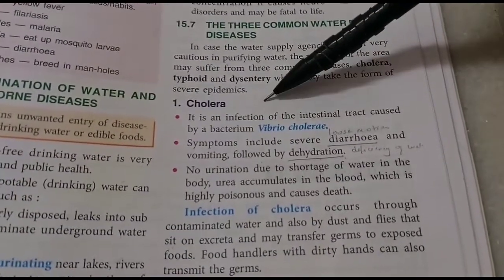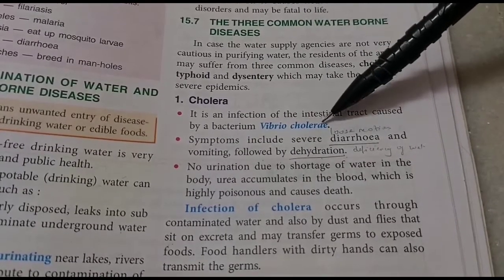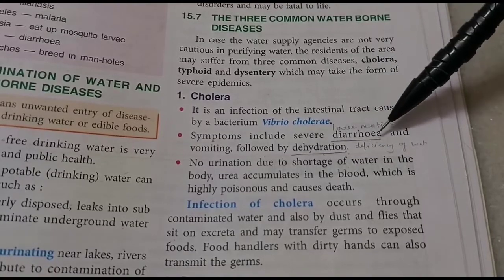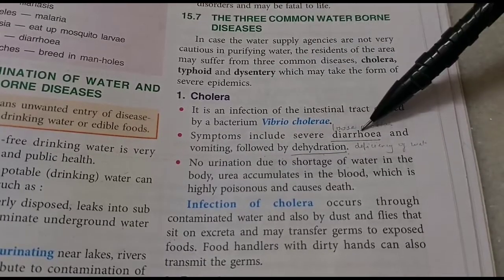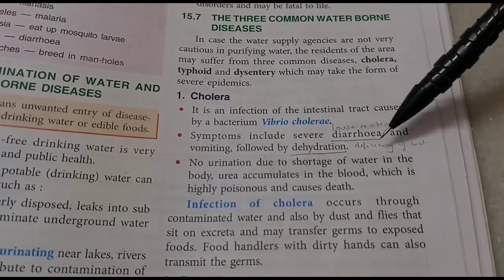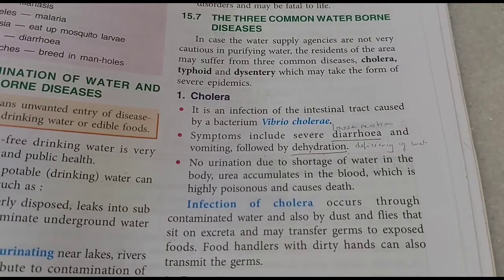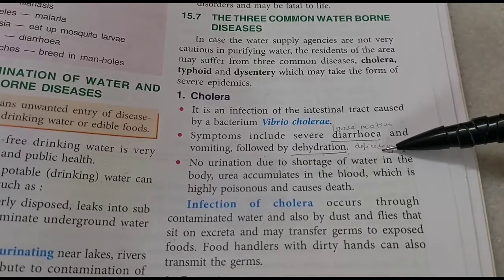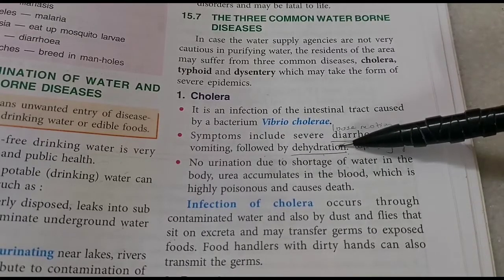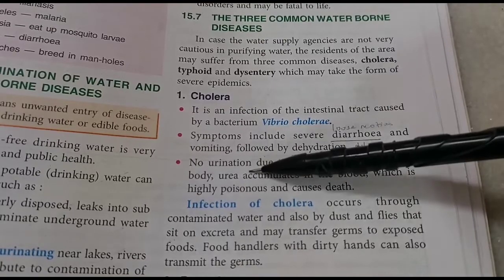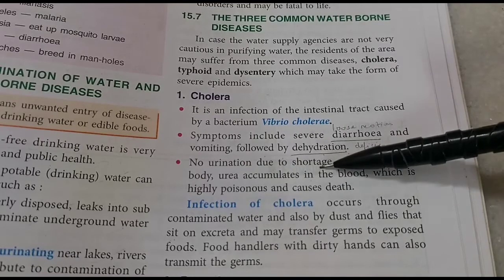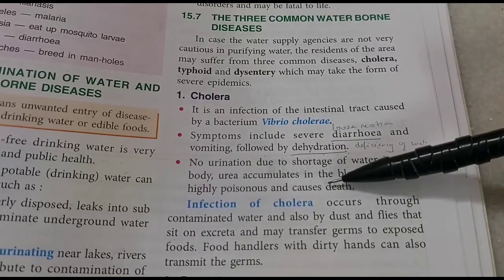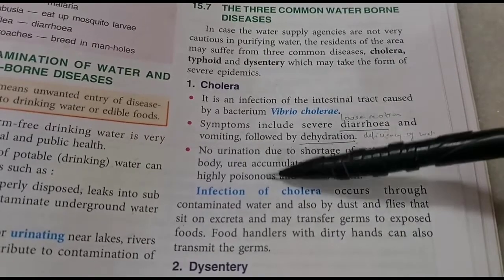Cholera is caused by the bacteria Vibrio cholerae, which infects the intestinal tract causing severe diarrhea and vomiting, leading to dehydration. We should drink plenty of ORS (oral rehydration solution) like Electrol powder or salt and sugar water to maintain the balance. In severe dehydration, kidneys cannot produce urine, urea accumulates in the blood, and if urea levels become very high it can cause death. The germ spreads through contaminated water, flies, and dirty food handlers.